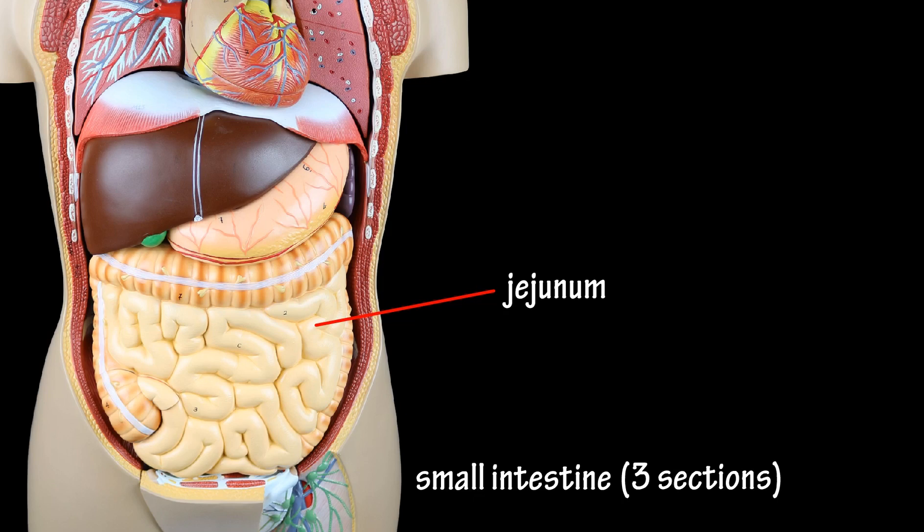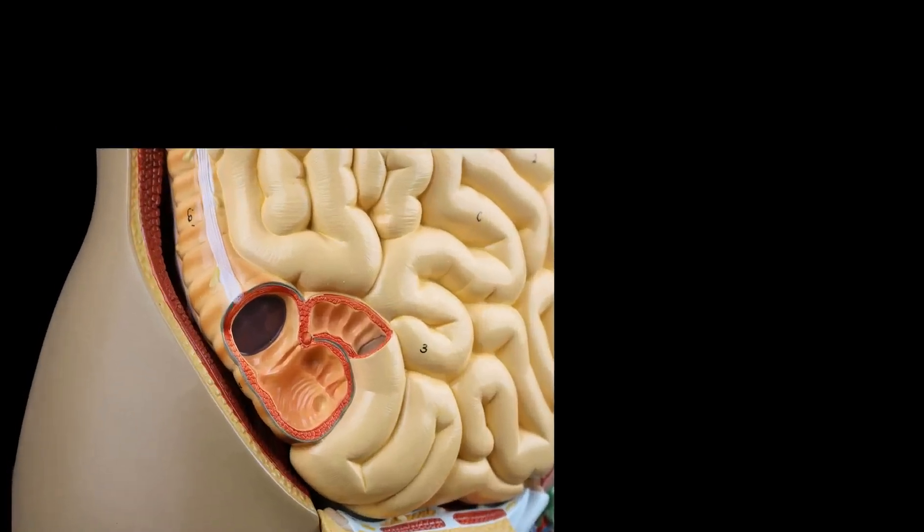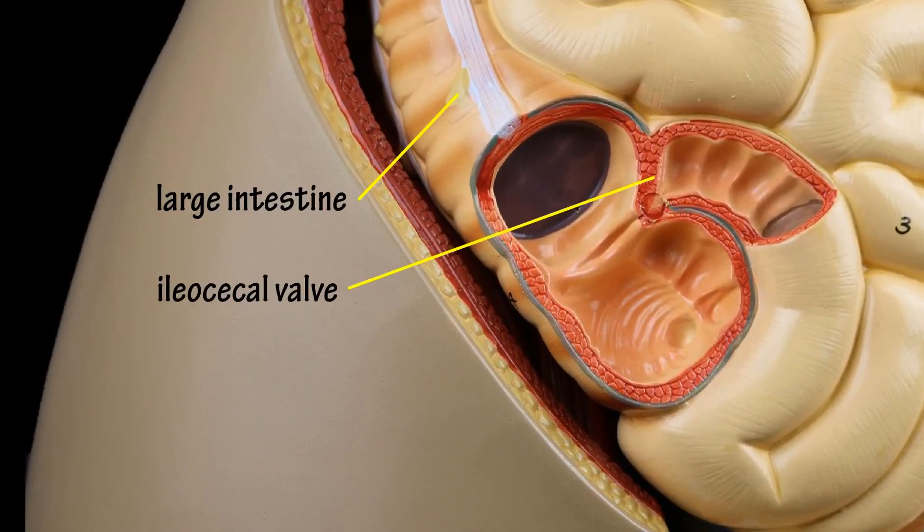The jejunum is the second middle region of the small intestine, and the ileum is the third section. At the end of the ileum is the ileocecal valve, which controls the entry of materials into the large intestine.